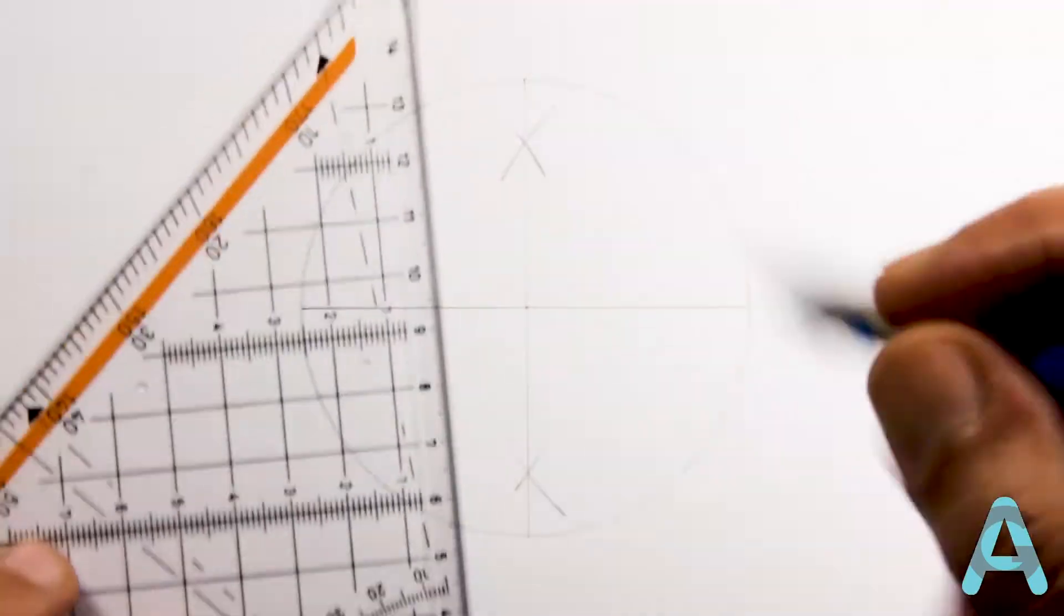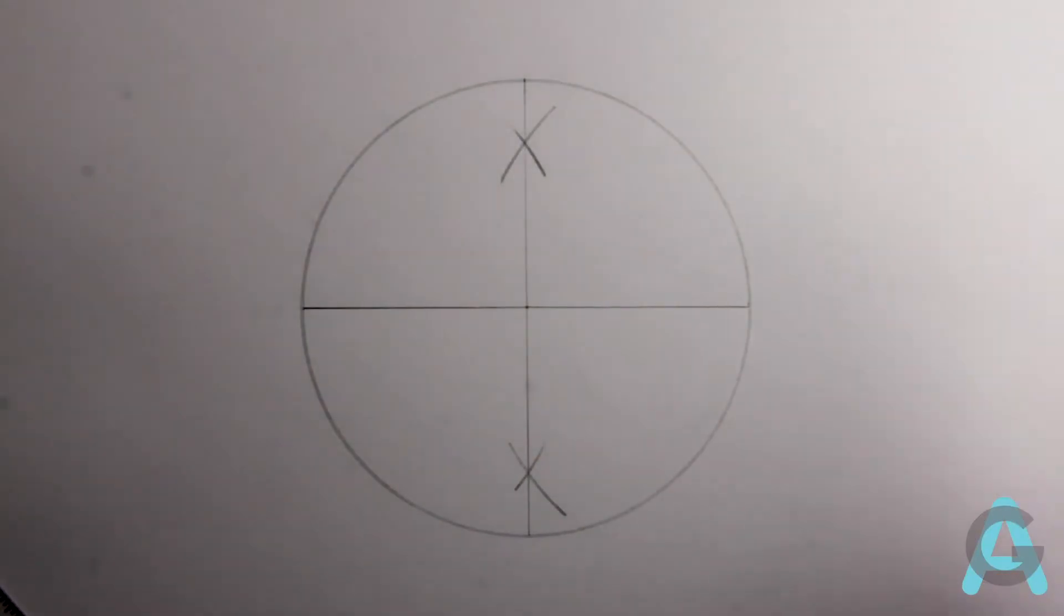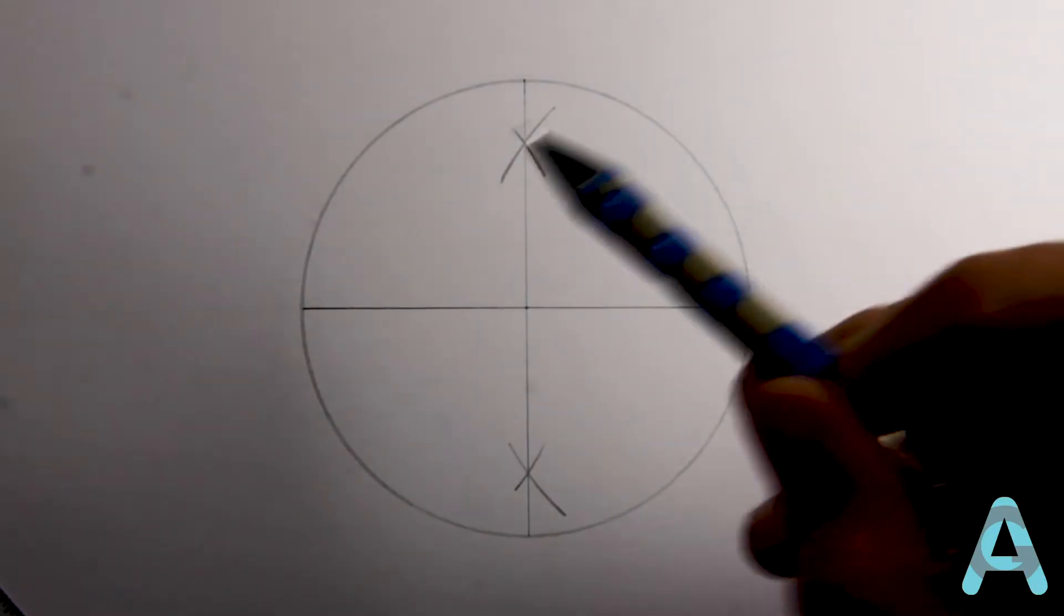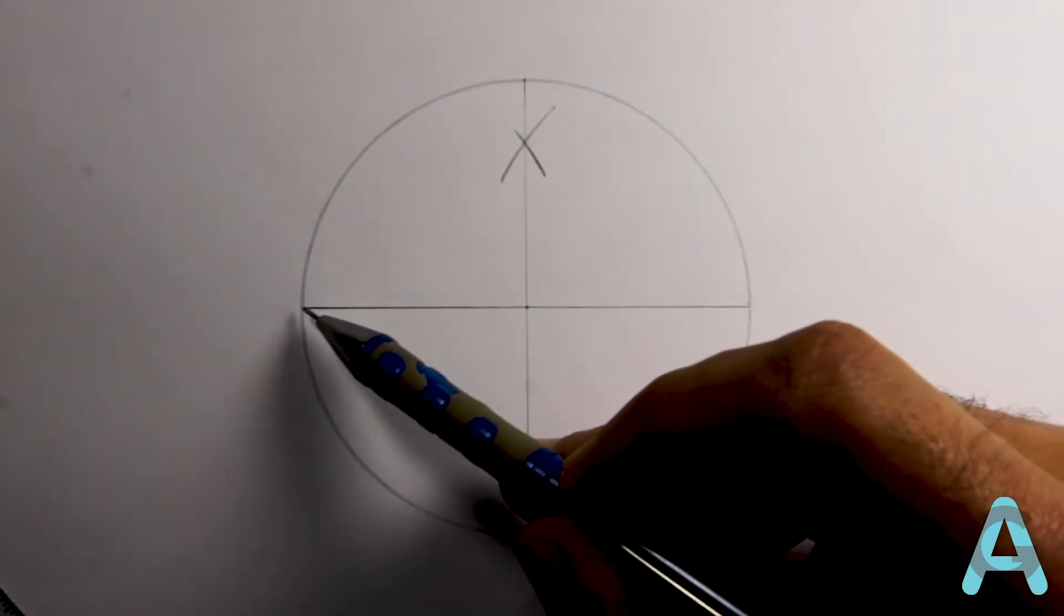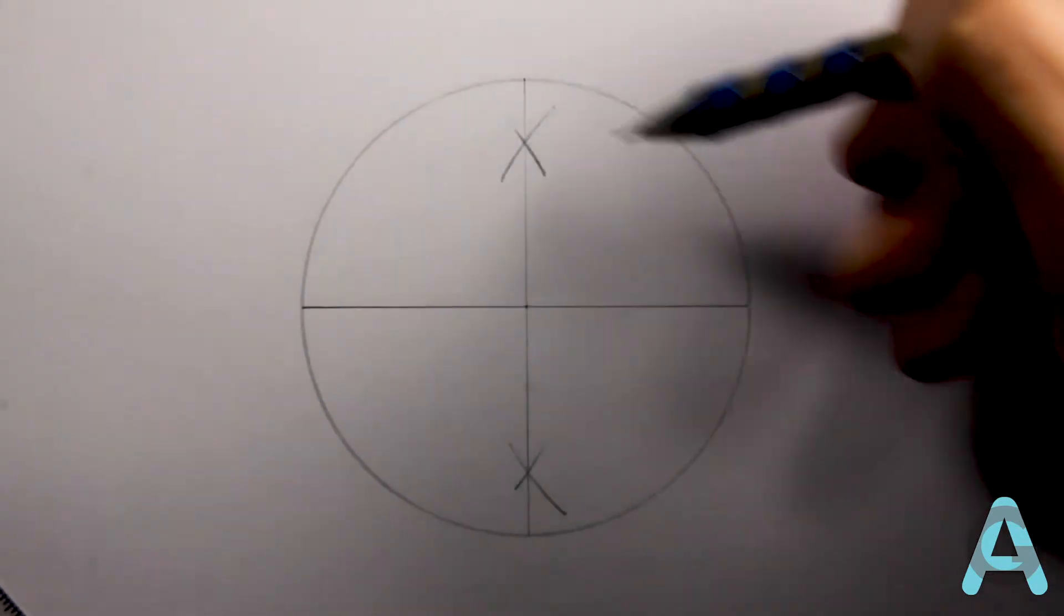There they are, the two diameters perpendicular to each other that would form a square. Now, all we have to do is to bisect this angle and this angle.